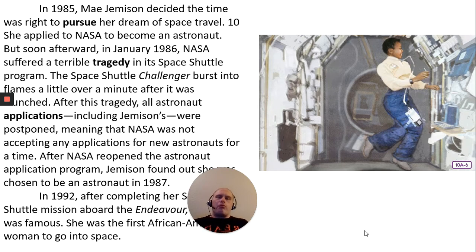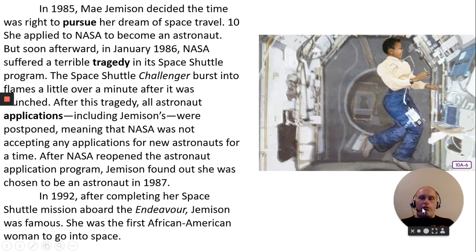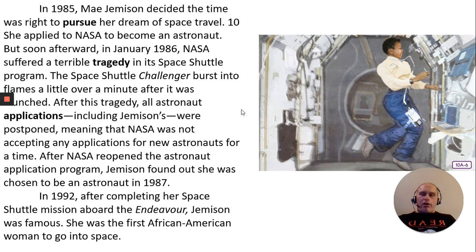But soon afterward, in January of 1986, NASA suffered a terrible tragedy in its space shuttle program. The space shuttle Challenger burst into flames a little over a minute after it was launched. After this tragedy, all astronaut applications, including Jemison's, were postponed — NASA was not accepting any new astronaut applications at that time. After NASA reopened the astronaut application program, Jemison found out she was chosen to be an astronaut in 1987.